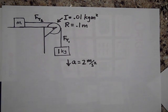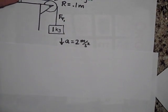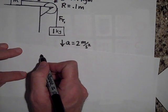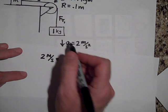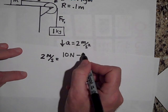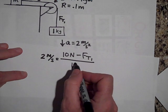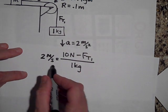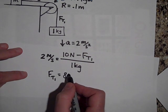To get tension FT1, we look at the one-kilogram mass. Acceleration equals net force over mass: that's 10 newtons down minus FT1, all over one kilogram. Solving gives two newtons equal to 10 minus FT1, so FT1 is eight newtons.